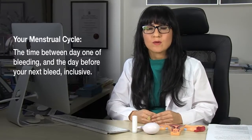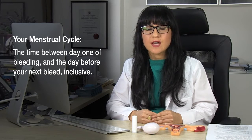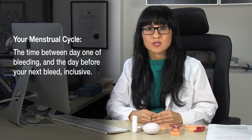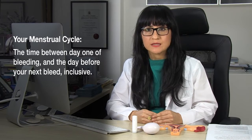It means that an egg has to be released to meet a sperm, so an embryo is made and hence implanted, and hopefully a pregnancy occurs. When we talk about a menstrual cycle, we talk about the length or the time between day one of bleeding to the day just before the next bleed. We call that a cycle.